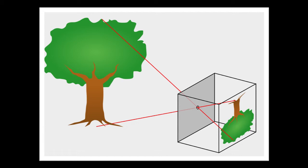A pinhole lens doesn't produce a great image. Making the pinhole small tends not to allow in enough light, producing a weak image, but making the pinhole larger produces a blurry image. As the pinhole becomes larger, light from each point in the scene passes through the lens in a larger cone, producing overlapping blotches of color instead of focused points. In practice, only the very smallest cameras, like hidden cameras, use pinhole lenses.